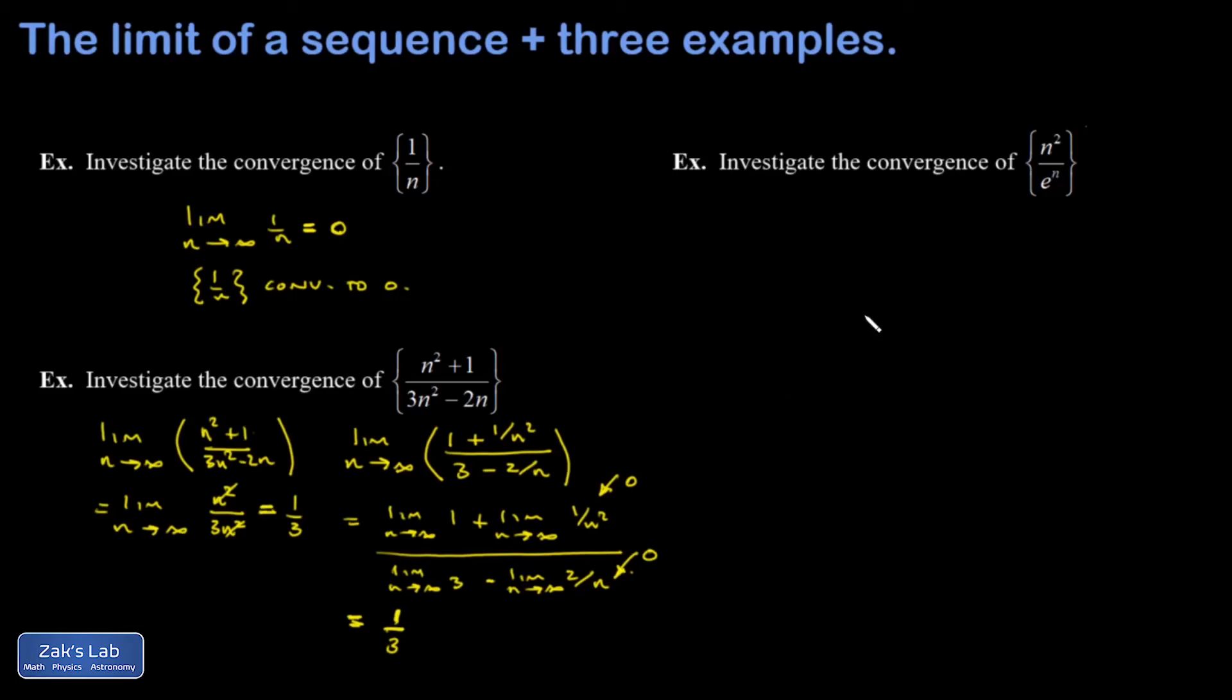The third example is interesting. I have n²/e^n, and if I look at the large n limit of that, it's like infinity over infinity. How do you handle that? The answer is using L'Hôpital's rule. But here's where we have to use that theoretical point on the previous slide. I can compare to a function on the real numbers and take its limit, and if that settles down to a finite number, that's the same as the limit of the sequence itself.